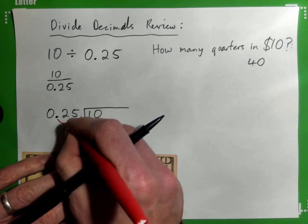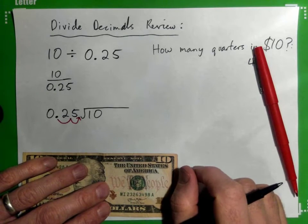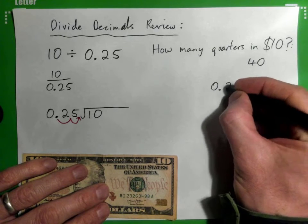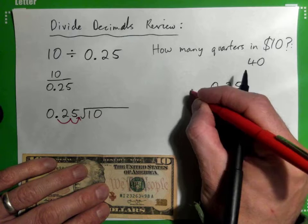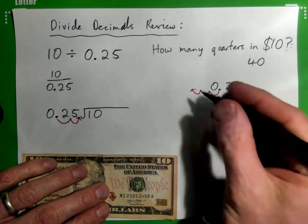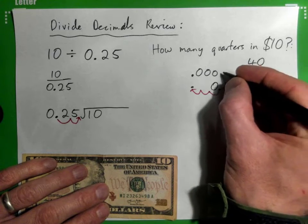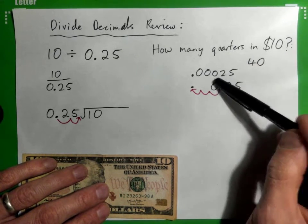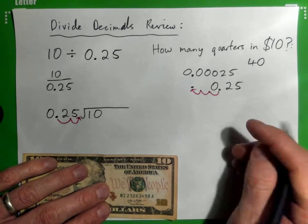Why do you go right instead of left? Write this down: 0.25. If you went this way, what would happen? You would end up with 0.00025 or some crazy thing. That makes it even worse - now we've got an even worse decimal. That's why we go to the right, because we want to turn this into a whole number.